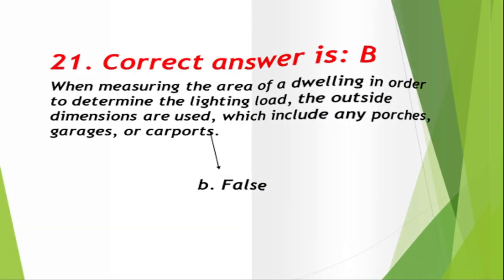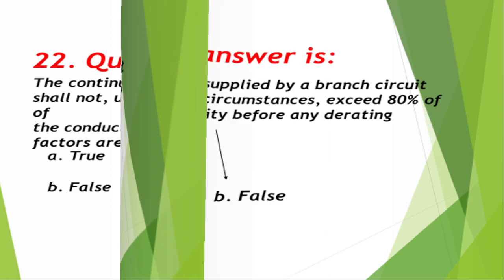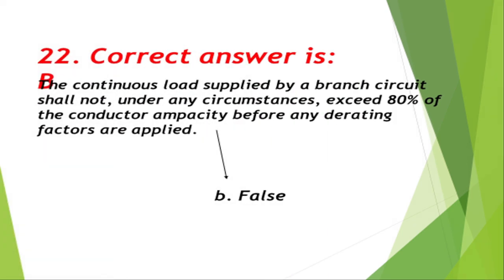Question number 22: The continuous load supplied by a branch circuit shall not under any circumstances exceed 80% of the conductor's ampacity before any derating factors are applied. A. True, B. False. Correct answer is B, false.